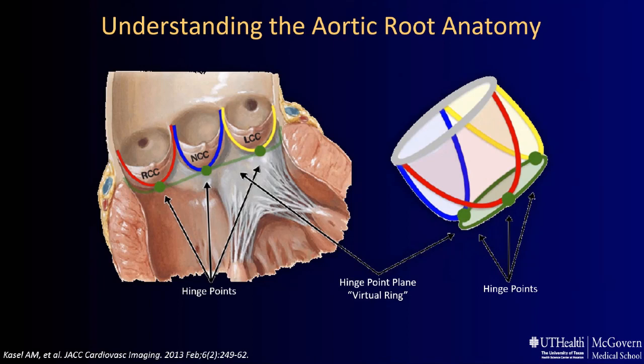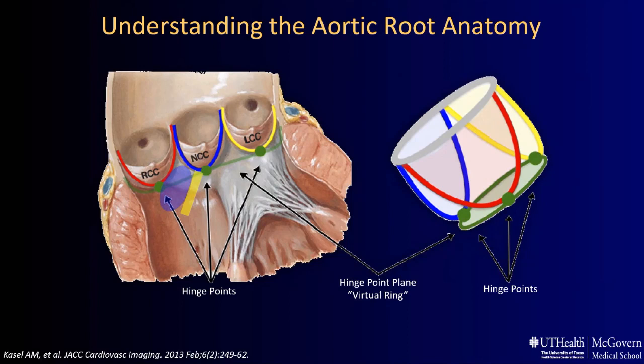It is also important to note the relationship of anatomical structures including the AV node and membranous septum with the non-coronary cusp and right coronary cusp. Annular sizing is predominantly done with cardiac CT, but it can be done with TEE and three-dimensional echo. A study compared cross-sectional 3D TEE to 2D TEE annular areas and found a significant difference; 3D annular area is fairly accurate and can be utilized as an alternative to CT when CT is not feasible.